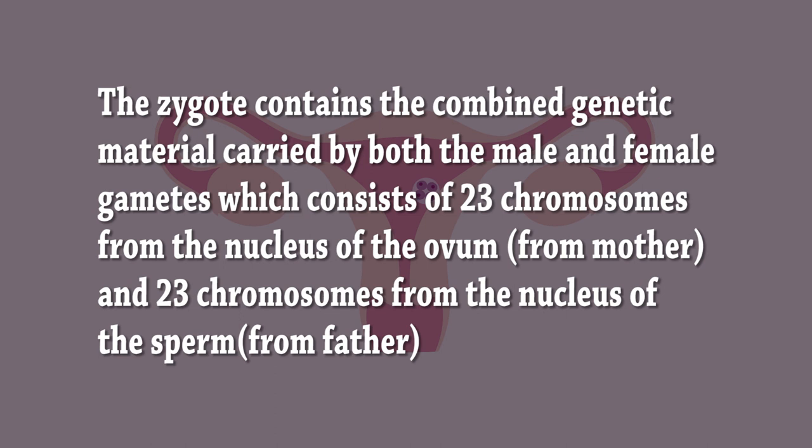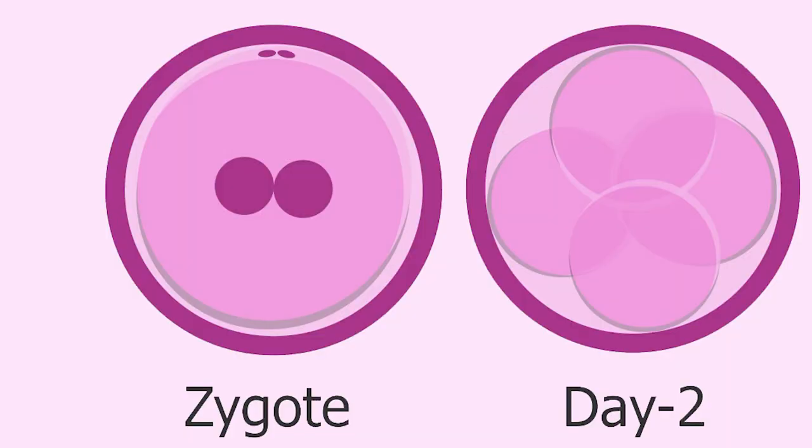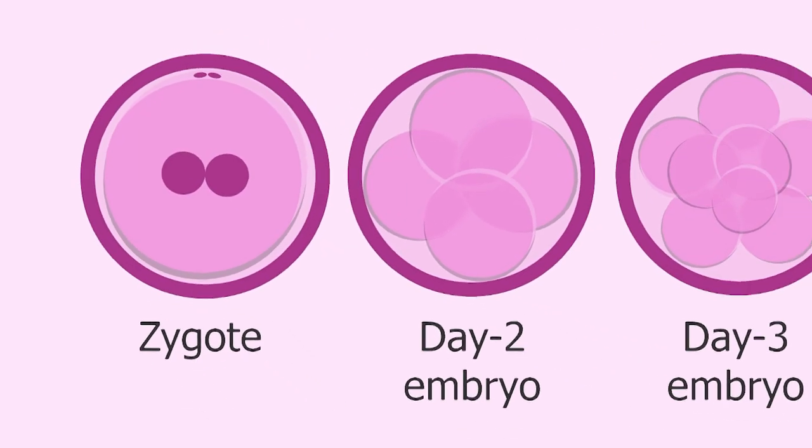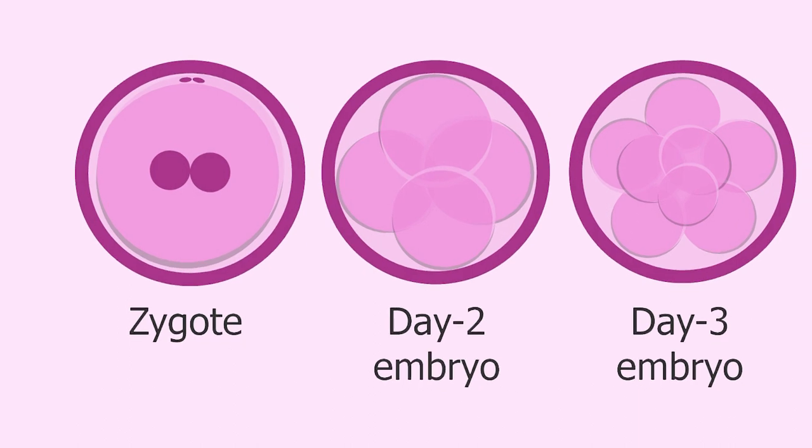23 chromosomes from the nucleus of the ovum come from the mother, and 23 chromosomes from the nucleus of the sperm come from the father. The zygote now has 46, or 23 pairs of, chromosomes. The zygote undergoes cleavage or division after the third day.